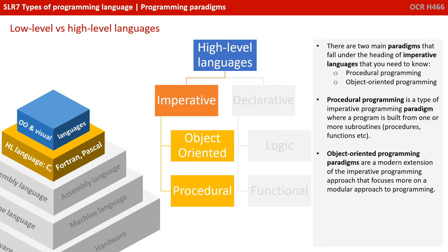There are two main paradigms that fall under the heading of imperative languages that you need to know about for the exam: procedural programming and object-orientated programming. Procedural programming is the one you'll probably be most familiar with — it's a type of imperative programming paradigm where a program is built from one or more subroutines, such as procedures or functions. Object-orientated programming paradigms are a more modern extension of the imperative programming approach, focusing on a modular approach to programming. We have a series of videos later in this series which will go into OOP in more detail.